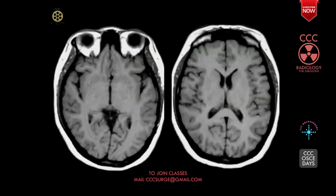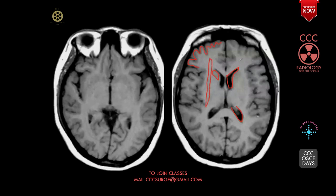Coming down again, here you can see the frontal horn of the lateral ventricle and the body of the lateral ventricle. There are some gray-looking structures — not white-looking. On T1 weighted image of MRI, the gray matter looks gray and the white matter looks white. You can see all the gyri have a gray lining — these are the gray matter. The periventricular region and brain parenchyma appears whiter in comparison to the cortex — this white parenchyma is called the white matter.